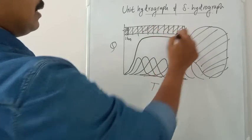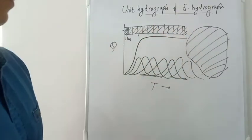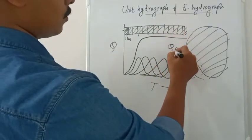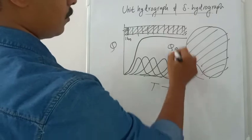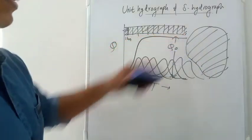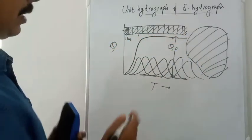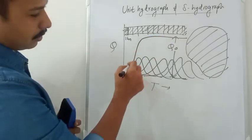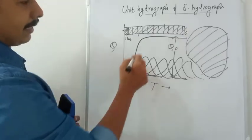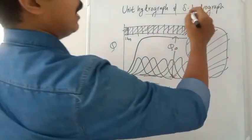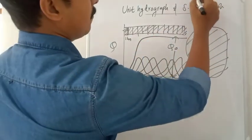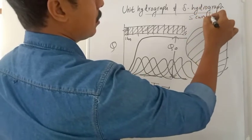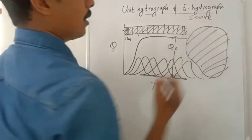When we add up all successive unit hydrographs, we get the S hydrograph. The discharge will reach a constant equilibrium value Q0, and the overall shape of the resulting hydrograph resembles the letter S. That is why it is called the S hydrograph or S curve.